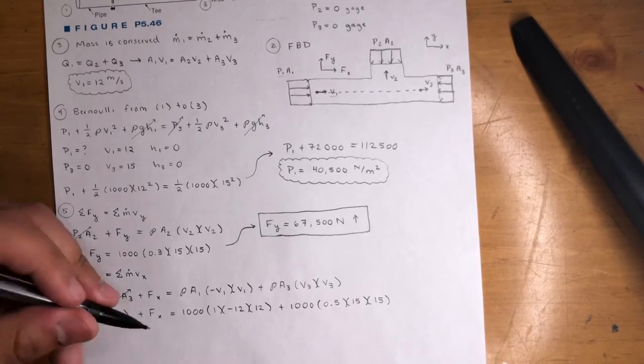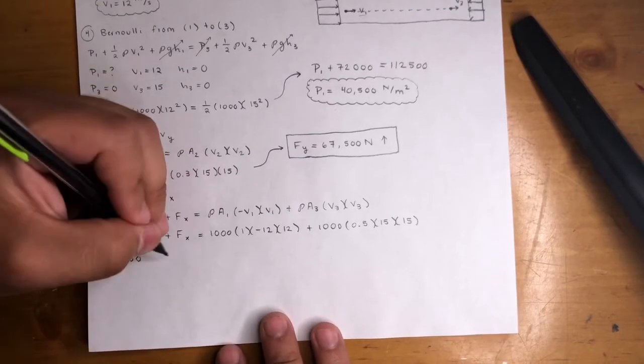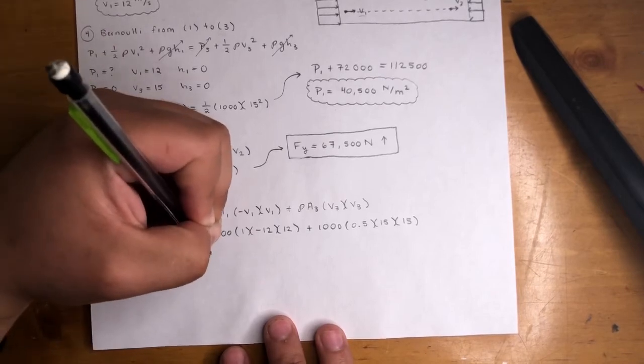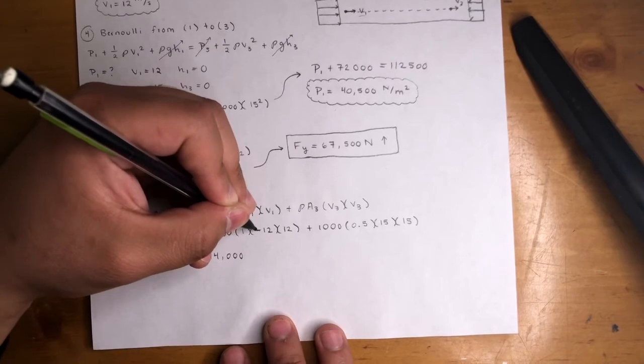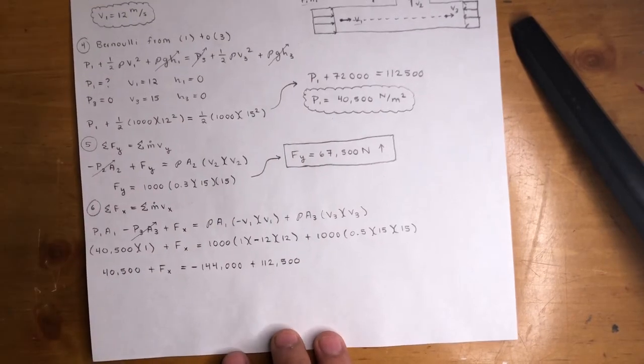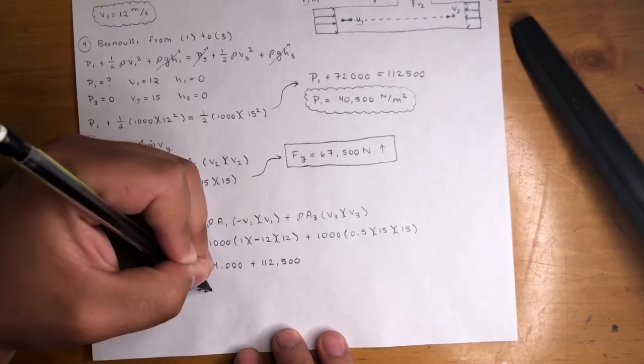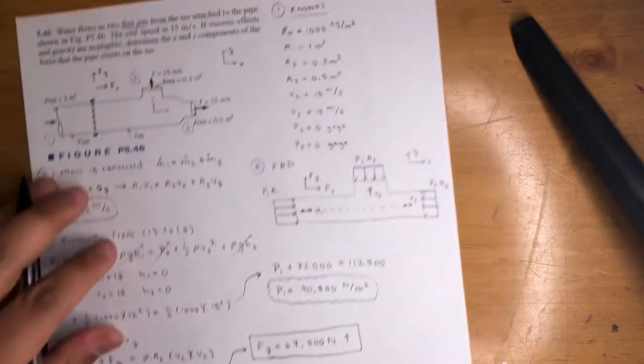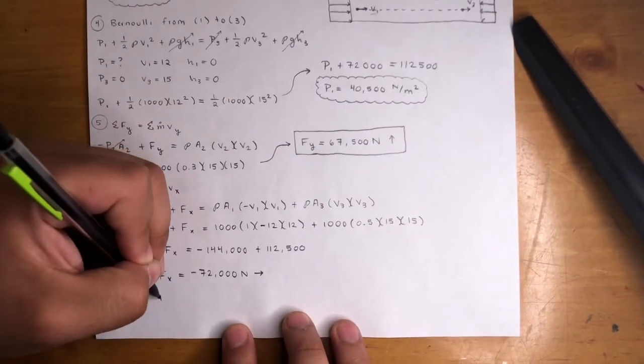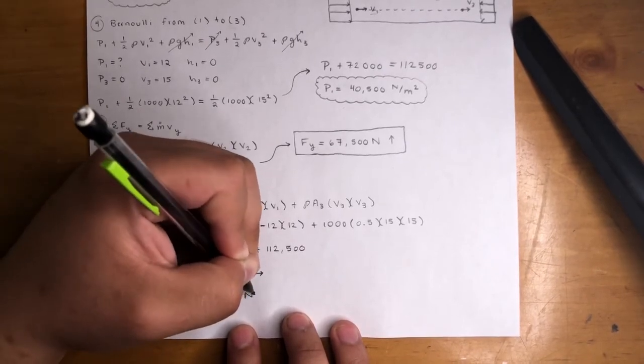With the numbers plugged in, simplify more. You will get 40,500 plus Fx equals negative 144,000 because of the negative here, plus 112,500. Do the math, you will get Fx equals negative 72,000 Newtons, and that means going this way. So positive Fx equals 72,000 Newtons going this way.